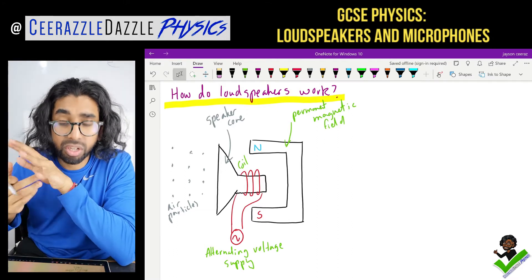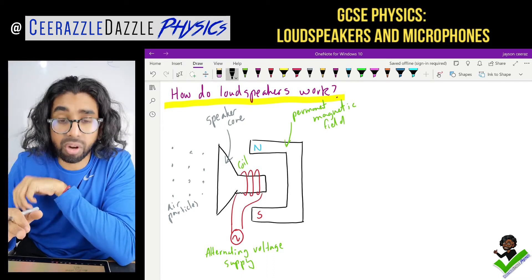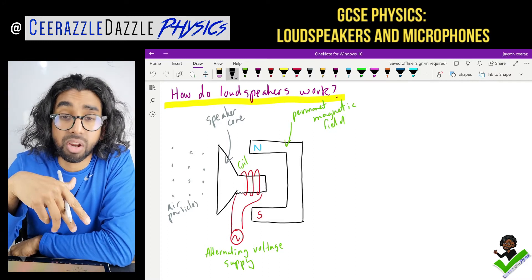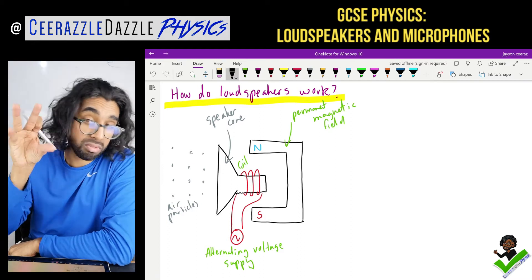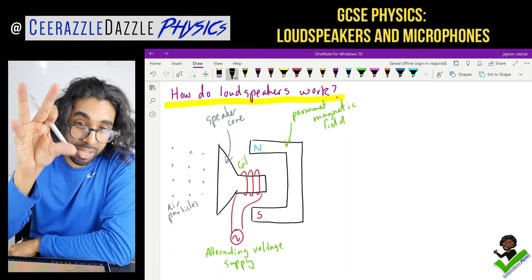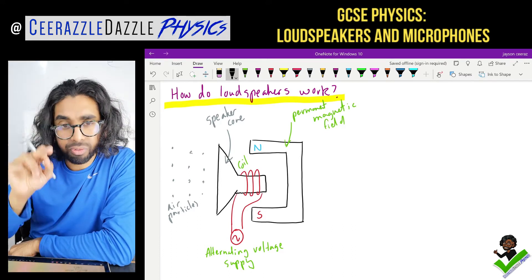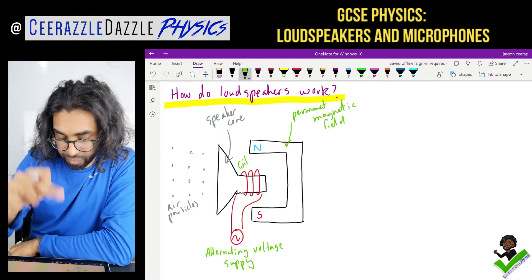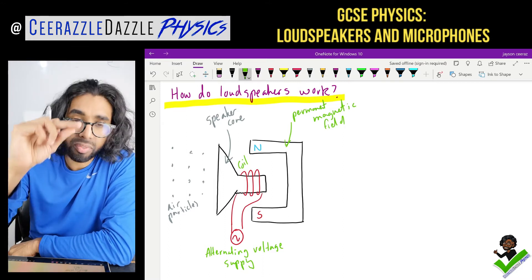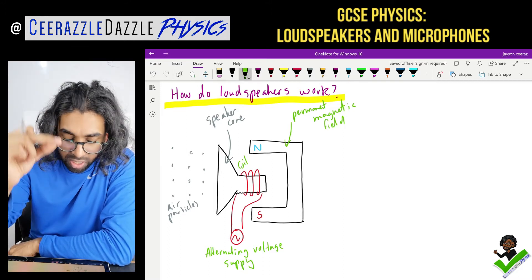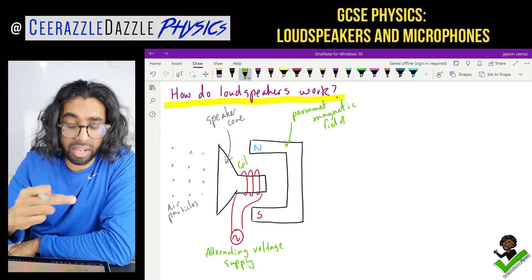Look at the following diagram — we're going to try and explain it using this basic diagram of a loudspeaker. As you can see, we've got the speaker cone — that's the bit that's going to pulse out. And we have a bar magnet, north and south — a permanent horseshoe magnet. At the end of the loudspeaker we wrap a coil around it, represented here by the red wire.